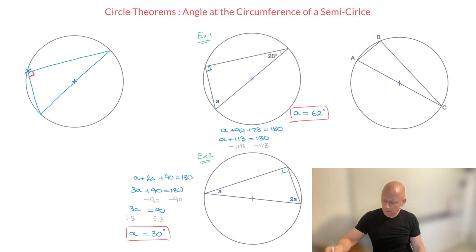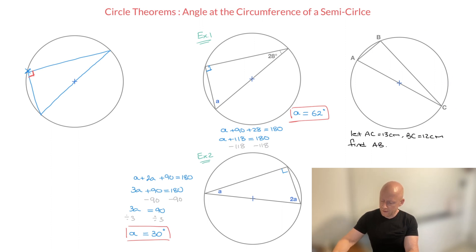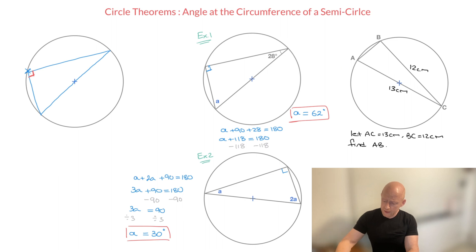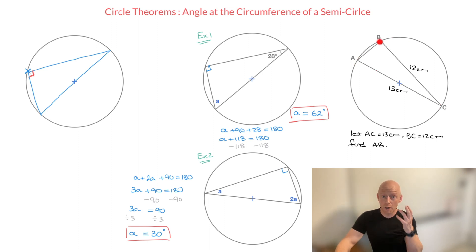I'll now work through the third and final example. Let AC equal 13 centimeters and BC equal 12 centimeters, and we need to find the side length AB. We can add these side lengths to the illustration: AC equals 13 centimeters and BC equals 12 centimeters. Looking at this, we can see that AC passes through the circle's center and has endpoints on the circle's circumference — it's therefore a diameter. Since AC is a diameter, the sector I'm hovering over is a semicircle. Consequently, since B is at the circumference of that semicircle, the interior angle at B must be a right angle.